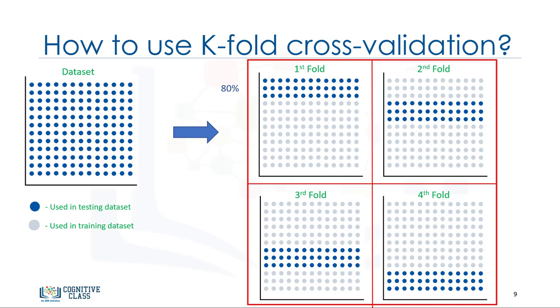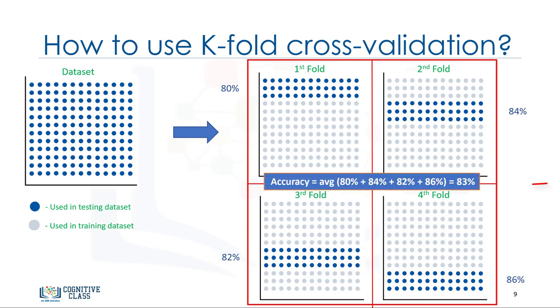The model is built using the training set and is evaluated using the test set. Then, in the next round, or in the second fold, the second 25% of the data set is used for testing and the rest for training the model. Again, the accuracy of the model is calculated. We continue for all folds. Finally, the result of all four evaluations are averaged. That is, the accuracy of each fold is then averaged, keeping in mind that each fold is distinct, where no training data in one fold is used in another.